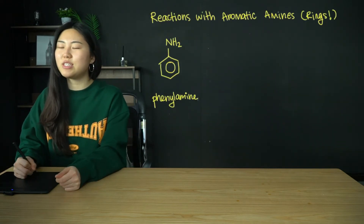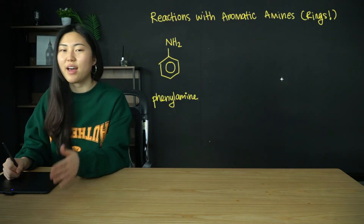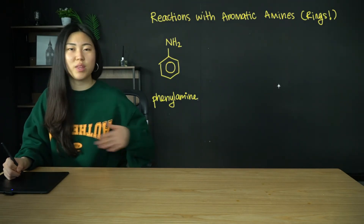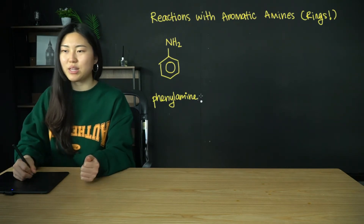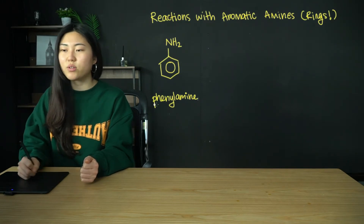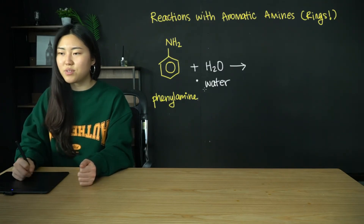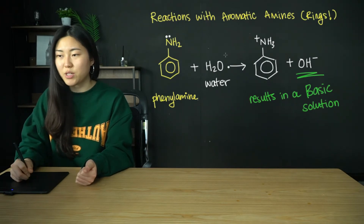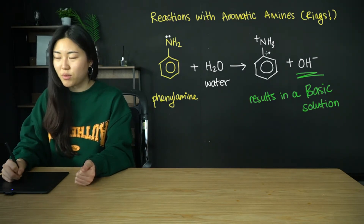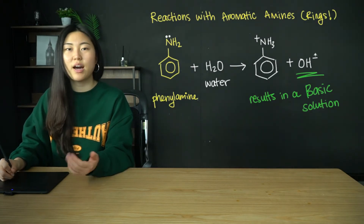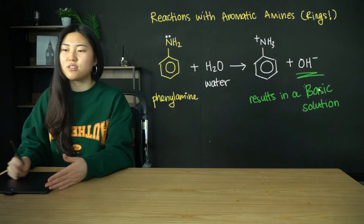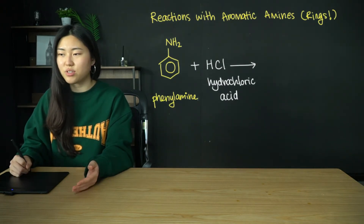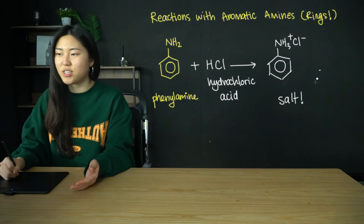Now we're going to look at the reactions with aromatic amines, not primary aliphatic amines. Aromatic means it has rings; aliphatic means it just has an alkyl chain without a ring. We have phenylamine — a benzene ring with an amine group. When phenylamine reacts with water, the lone pair is donated to accept a proton from the water, forming an NH3+ structure and an OH− hydroxide ion, resulting in a basic solution. Phenylamine is still basic, so reacting it with an acid gives a neutralization reaction and a salt.